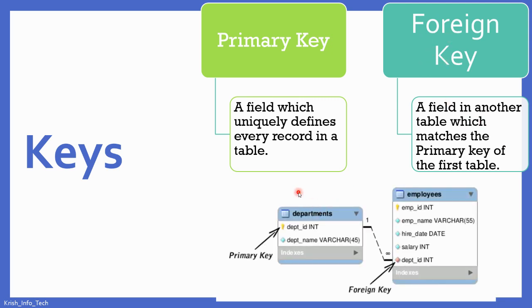Here is an example. I have two different tables: departments and employees. Under departments, I have department ID and department name. Under the employee table, I have employee ID, employee name, hire date, salary, and department ID. In these two tables, department ID is the common field, so I connect these two tables using department ID. In the first table, department ID is the primary key. When the same field comes to the second table, that column is going to be called the foreign key. That's the difference between primary key and foreign key.